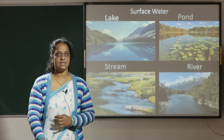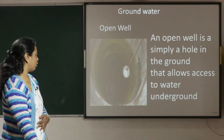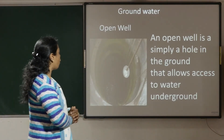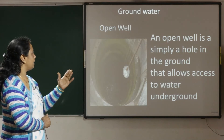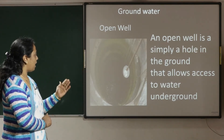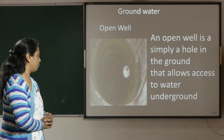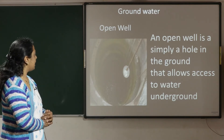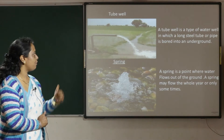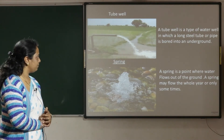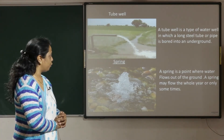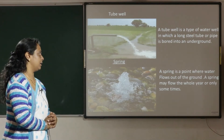Now let's see the ground water. In ground water we have the open well. An open well is simply a hole in the ground that allows access to water underground. A tube well is a type of water well in which a long pipe or tube is bored into the underground.